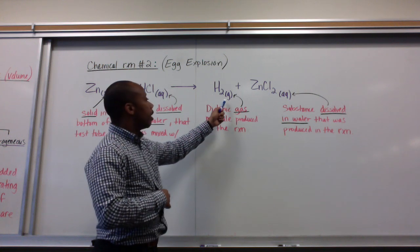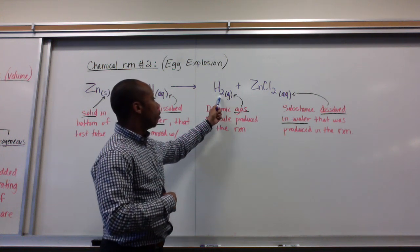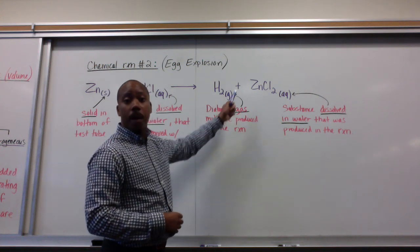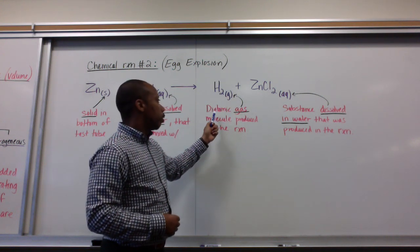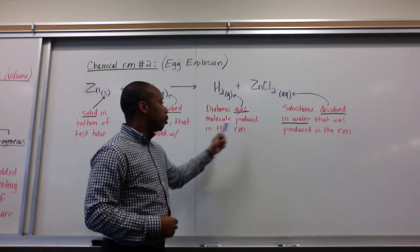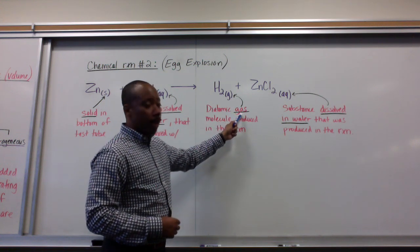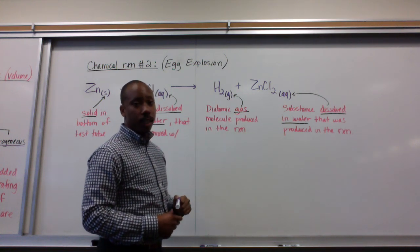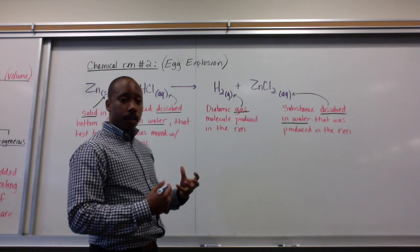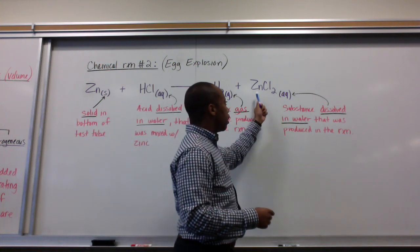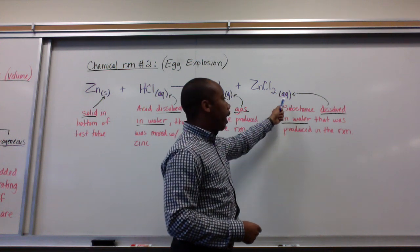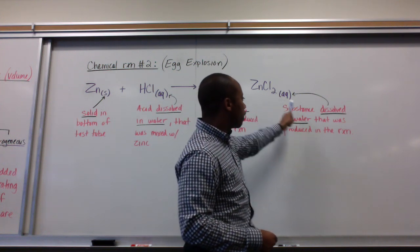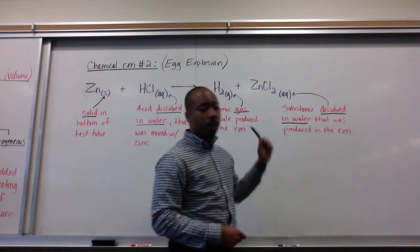What was being produced was this gas, H2. This is, again, a diatomic molecule that was produced. We see a trend of the class. So this is a diatomic gas molecule produced in the reaction. We symbolize that it's a gas with this lowercase g here. Also in the test tube that was produced is this compound, zinc chloride. It is also aqueous, meaning this zinc chloride is a substance that is dissolved in water.